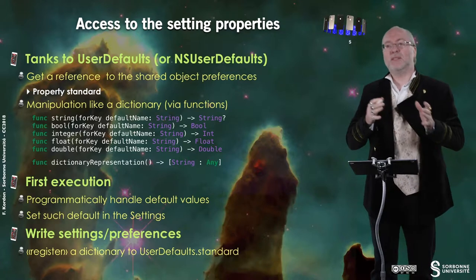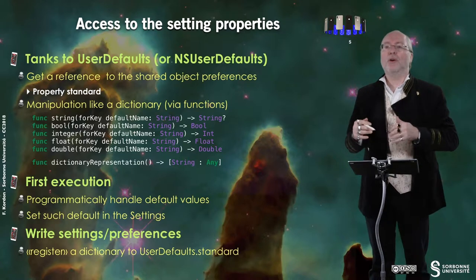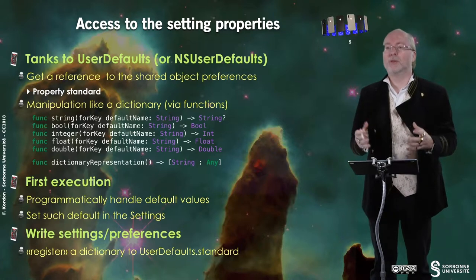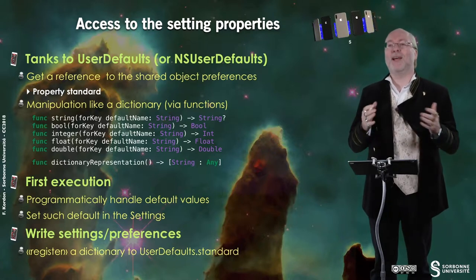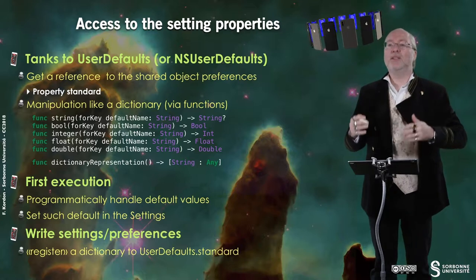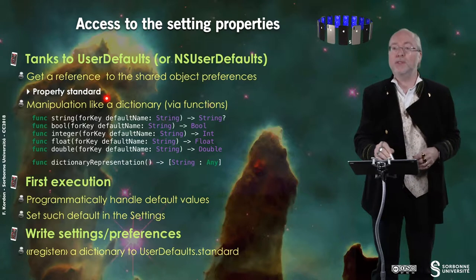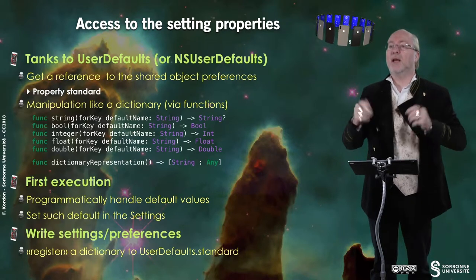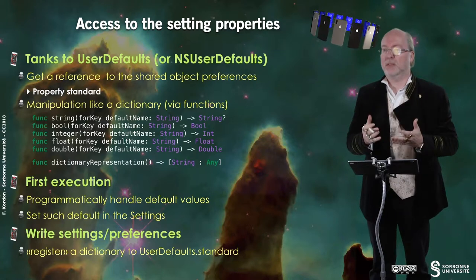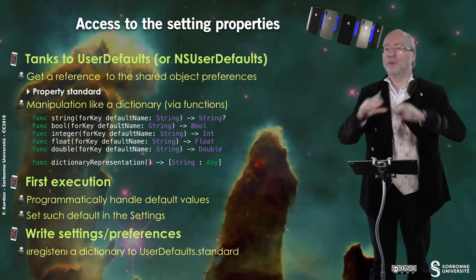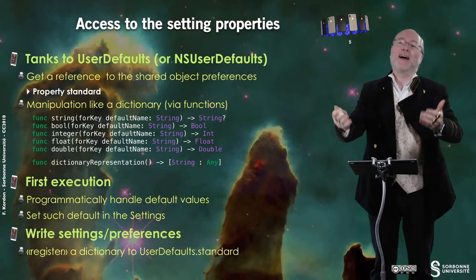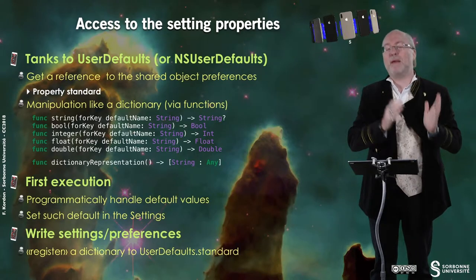When you want to access the settings properties, you use a class called UserDefaults — or in Objective-C, NSUserDefaults — and it allows you to get a reference to the shared preference object. You have a property called standard, and you access the shared object through it. Preferences are manipulated via a dictionary, which is in read-only mode, so you access it by means of functions.